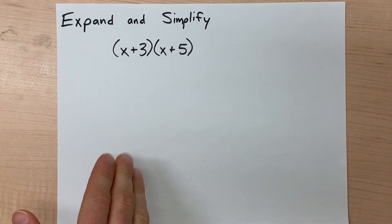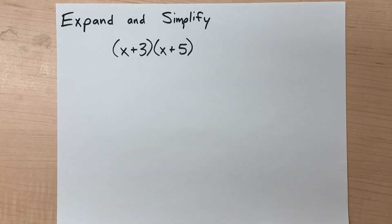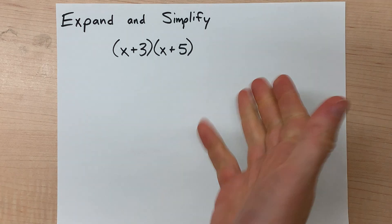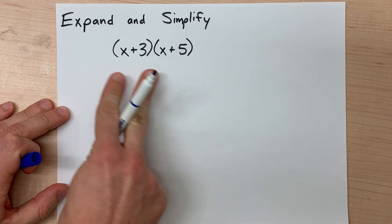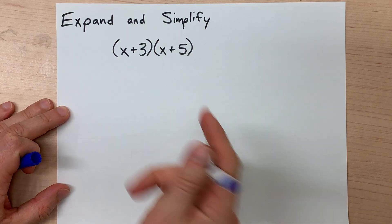Let's expand and simplify x plus 3 times x plus 5. Now the way we teach this here in Canada is that this is two things in one set of brackets times another two things.